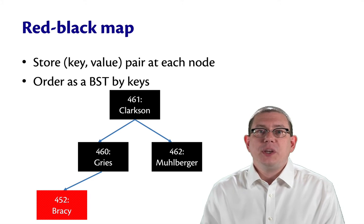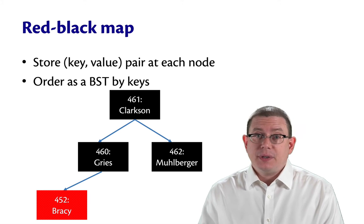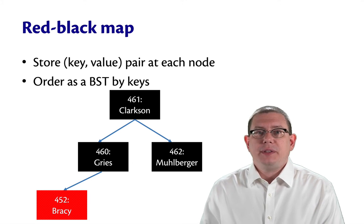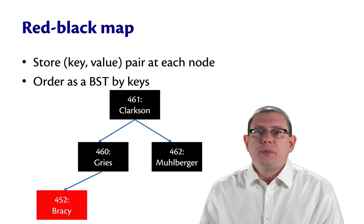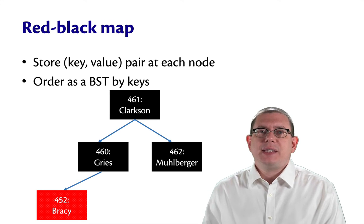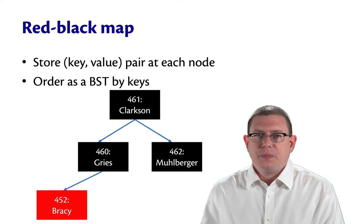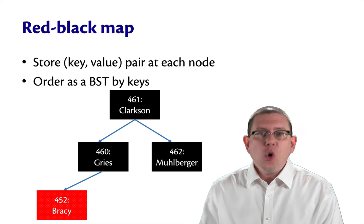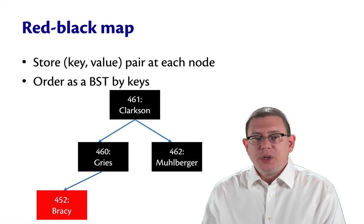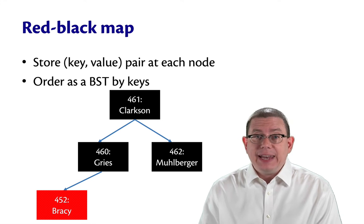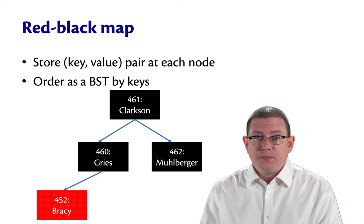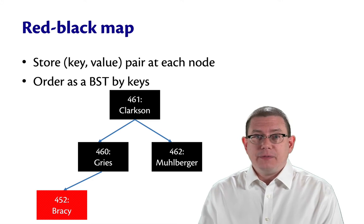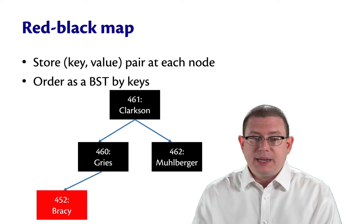Finally, let's return to maps. We started off all of this balanced binary tree implementation by thinking about sets instead of maps, because sets are a little easier. To get back to maps, all we have to do is store a pair at each node — a pair of a key and a value. In other words, a binding.